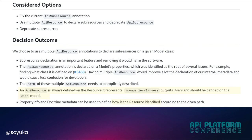Which we did. The decision outcome added to this document was that we could define multiple resources on a class, and you have to define this resource on the class represented by the metadata. For example, for companies-slash-ID-slash-users, the resource should be declared on user.